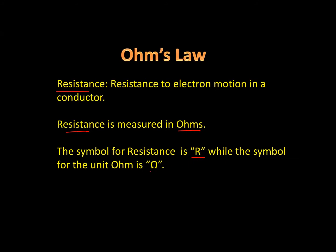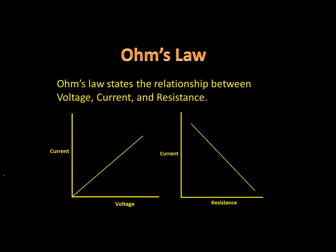The symbol for the unit ohm is the Greek letter omega, which looks sort of like a horseshoe. Ohm's law states the relationship that exists between three things: voltage, current, and resistance. We can look at this more closely by examining a couple of graphs. The first graph shows the relationship between current and voltage within an electric circuit.